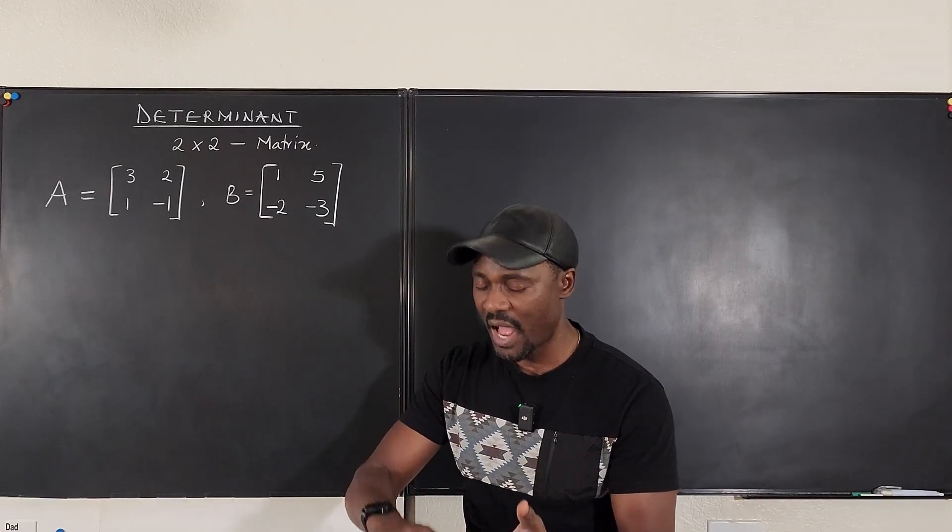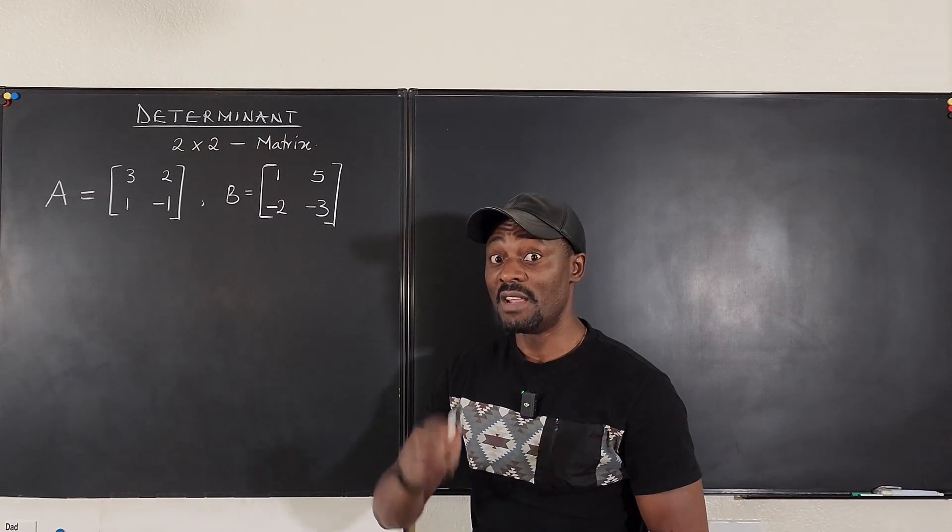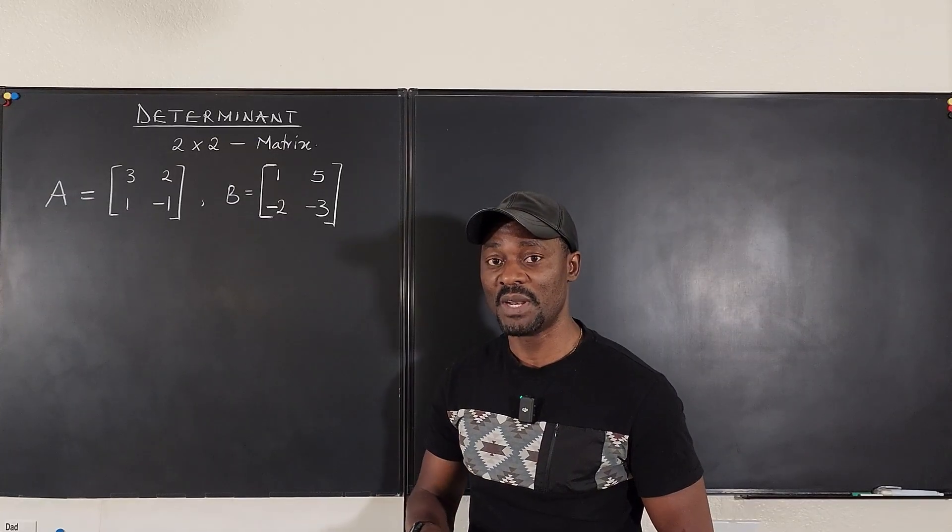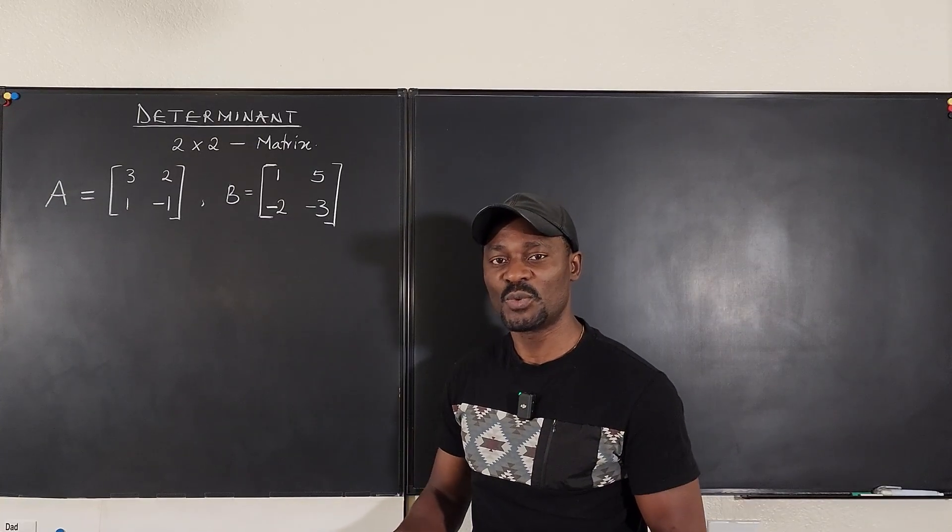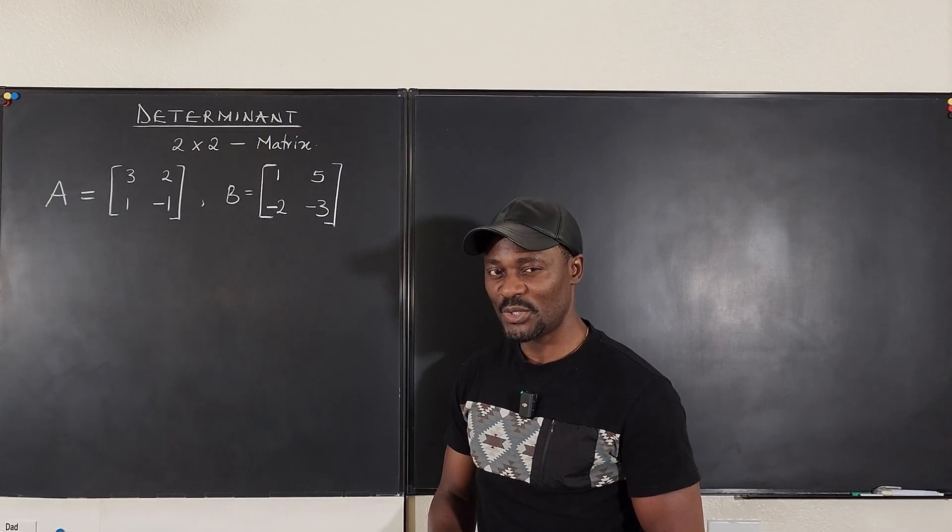You know how you have to be careful what the matrices are for you to multiply them. But when it comes to the determinants, because they're just numbers, you can add, subtract, multiply, divide, square. You can even take the square root of a determinant. But you can't do all of that just with matrices.